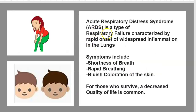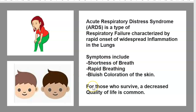Acute Respiratory Distress Syndrome is a type of respiratory failure characterized by a rapid onset of widespread inflammation in the lungs. Symptoms include shortness of breath, rapid breathing, and bluish coloration of the skin. For those who survive, a decreased quality of life is common.